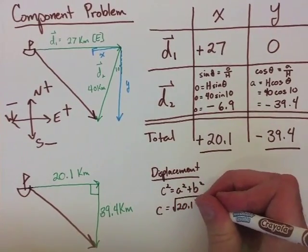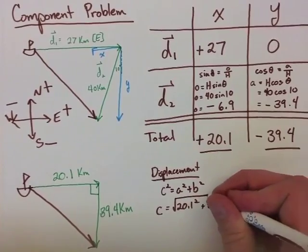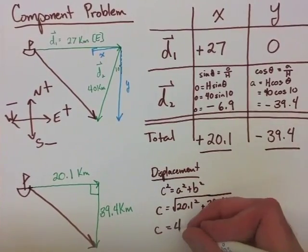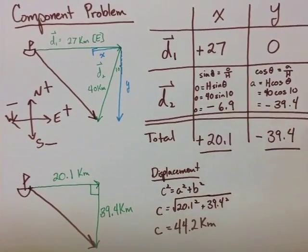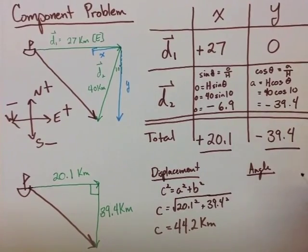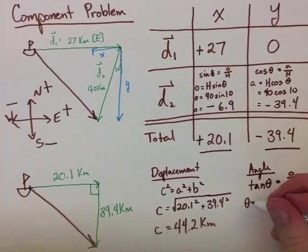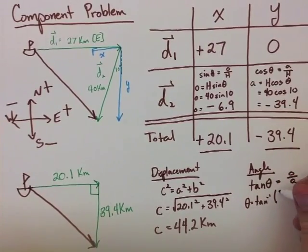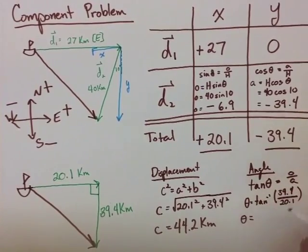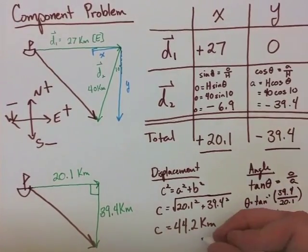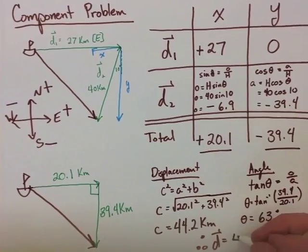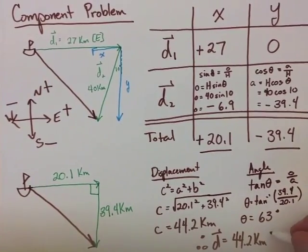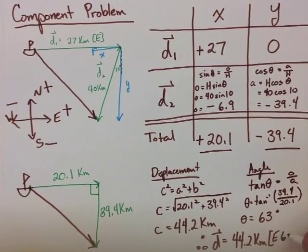We end up substituting in and finding that our final displacement is equal to 44.2 kilometers. We find our angle by using SOHCAHTOA, we're going to use tan theta again. And after we rearrange and substitute our values into the equation, we find our angle to be 63 degrees. Therefore, our final displacement is 44.2 kilometers east, 63 degrees south.